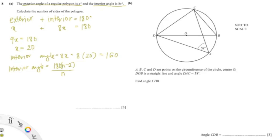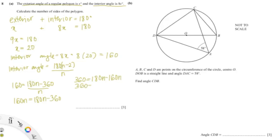Since we already found the interior angle, we set 160 equal to (180n minus 360) over n. Bringing n to the other side gives 160n = 180n minus 360. Collecting like terms gives 360 = 20n, so bringing 20 to the other side gives n = 360 over 20, giving us the answer of 18.